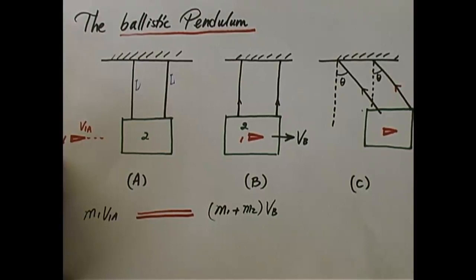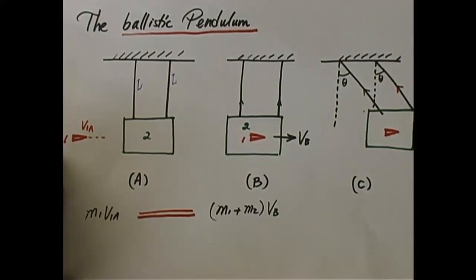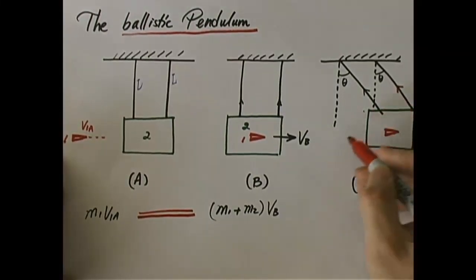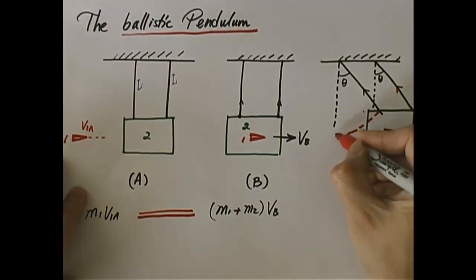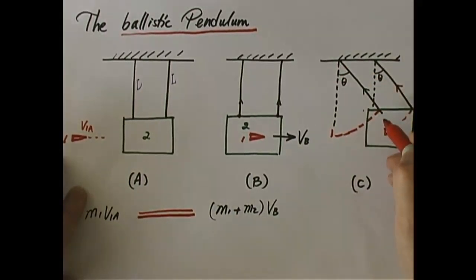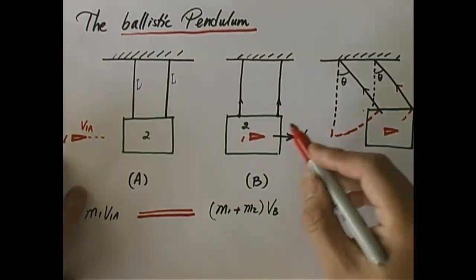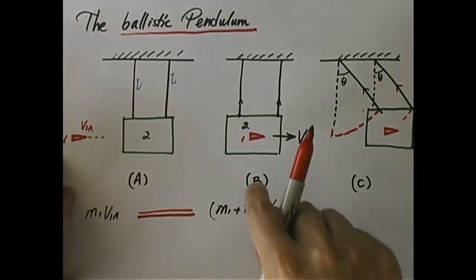So we cannot use conservation of linear momentum from B to C. What can we use instead? Conservation of mechanical energy. The condition is that all forces doing work must be conservative. The external forces are gravity — which is conservative — and tension. The tension doesn't do any work because the object swings in a circle: the motion is tangential while the tension is radial, so they're perpendicular. Therefore we can use conservation of mechanical energy from stage B to stage C.